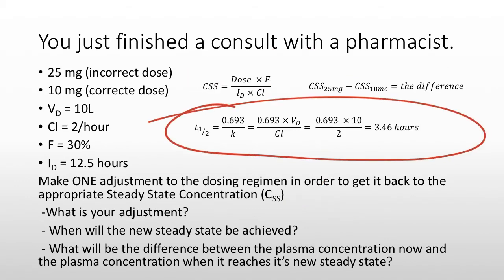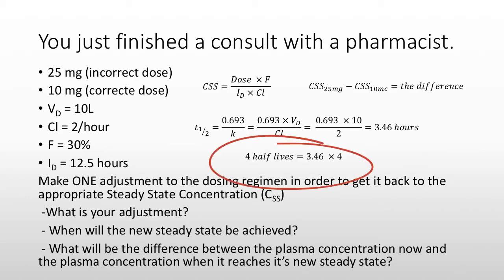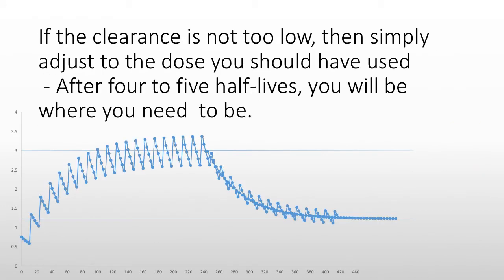You can calculate the half-life from those variables — it's 3.5 hours. You can say at four half-lives you'll be back to the appropriate level. But we're starting at a higher concentration and coming back down — do we really have to go four half-lives to get back down? The answer is yes. Anytime there is a change in steady state, it will take four to five half-lives to get to that new steady state.